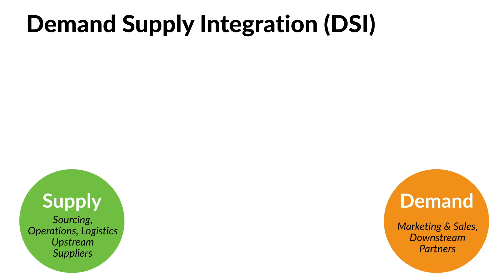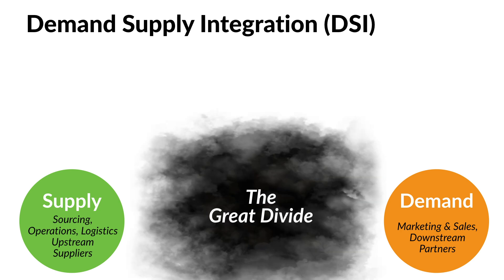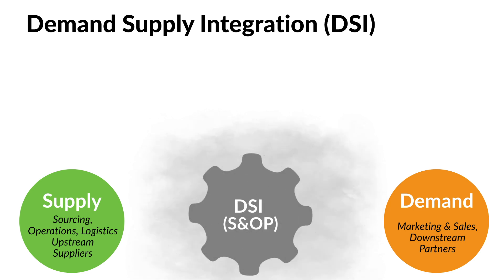In many firms, the demand and supply organizations are not integrated, do not communicate much with each other, and even blame each other for problems. The famous business scholar Peter Drucker referred to this gap as the Great Divide, and he lamented how adversely it affects firm performance. Demand supply integration attempts to bridge the Great Divide by facilitating cross-functional integration through a sales and operations planning process.